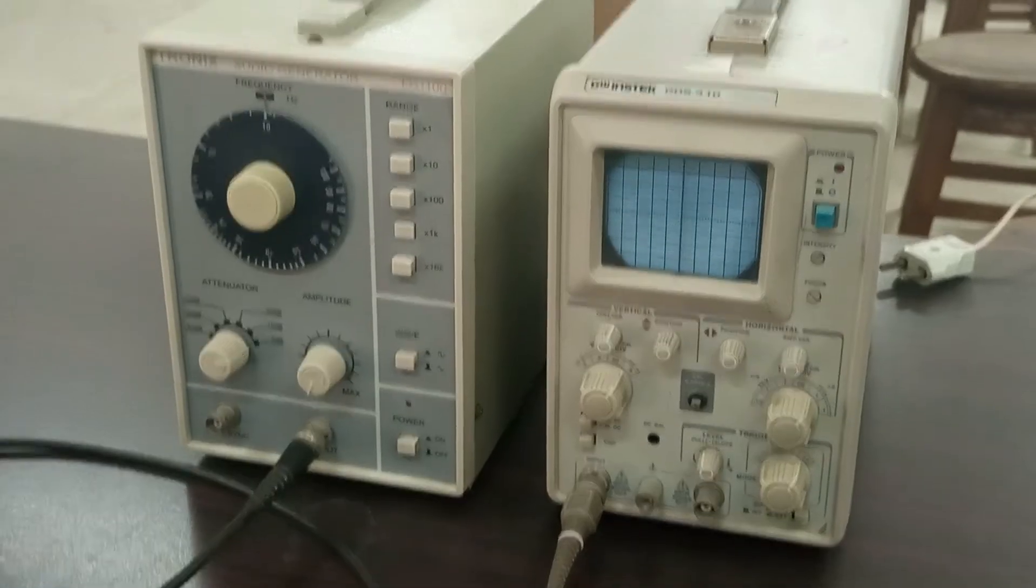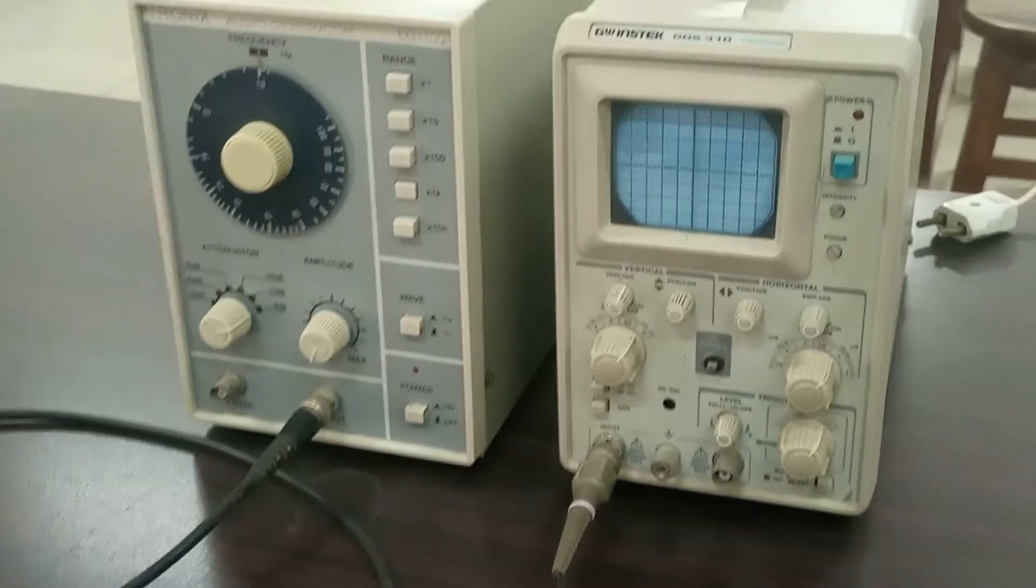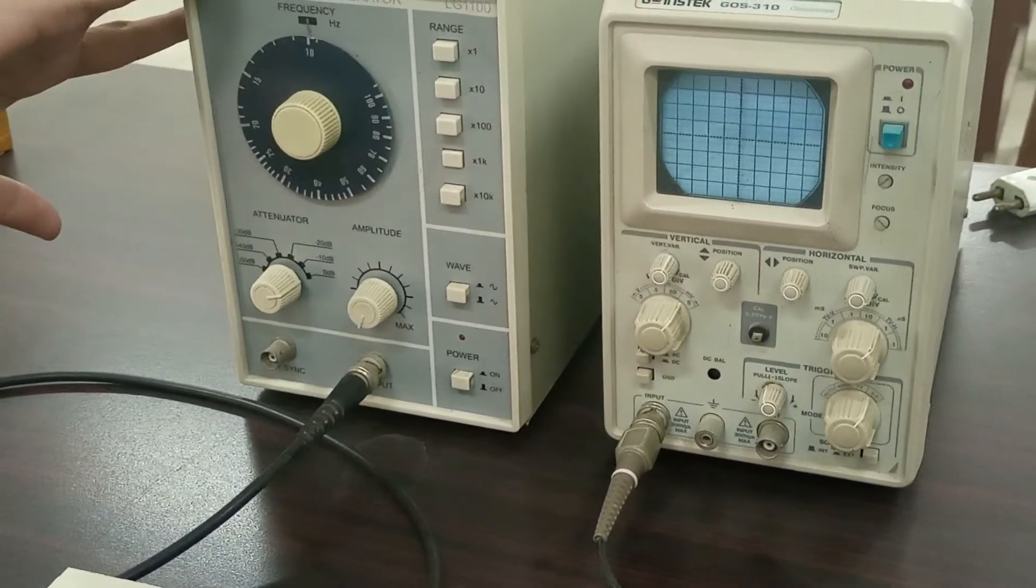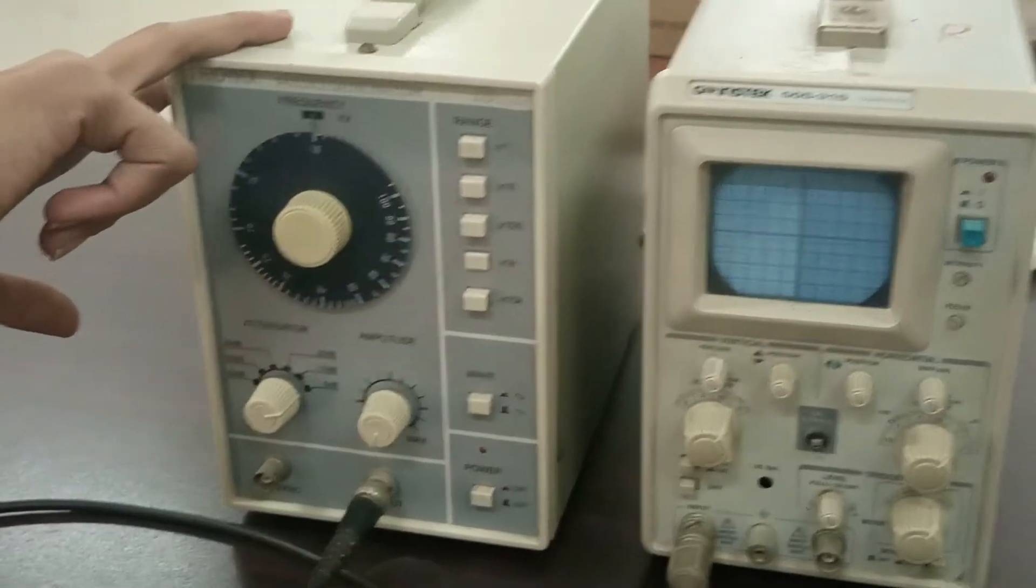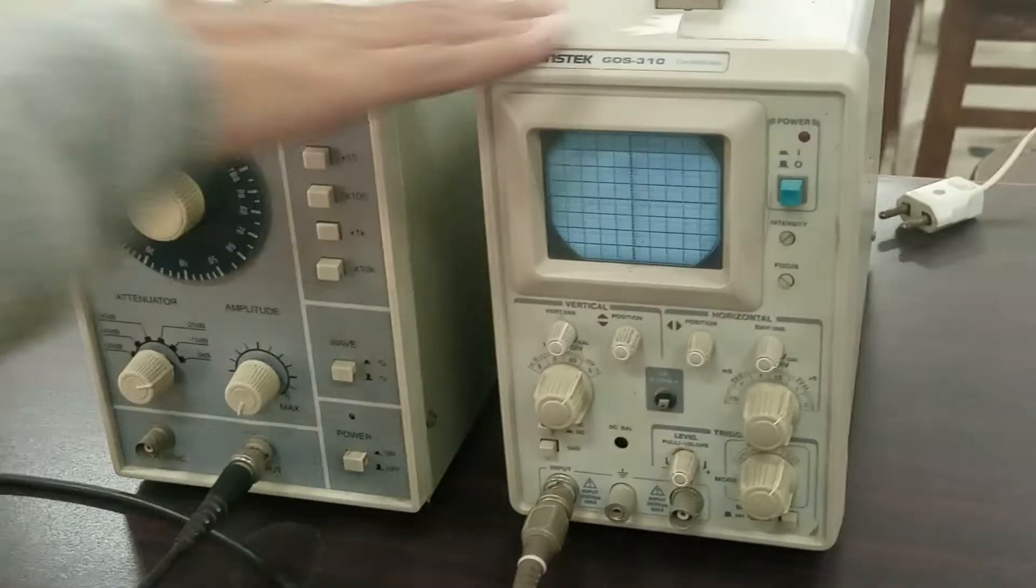Procedure: Experimental setup of the rejector circuit. The experimental setup of the rejector circuit is same as the acceptor circuit. This one is the cathode ray oscilloscope, frequency generator, and the breadboard.